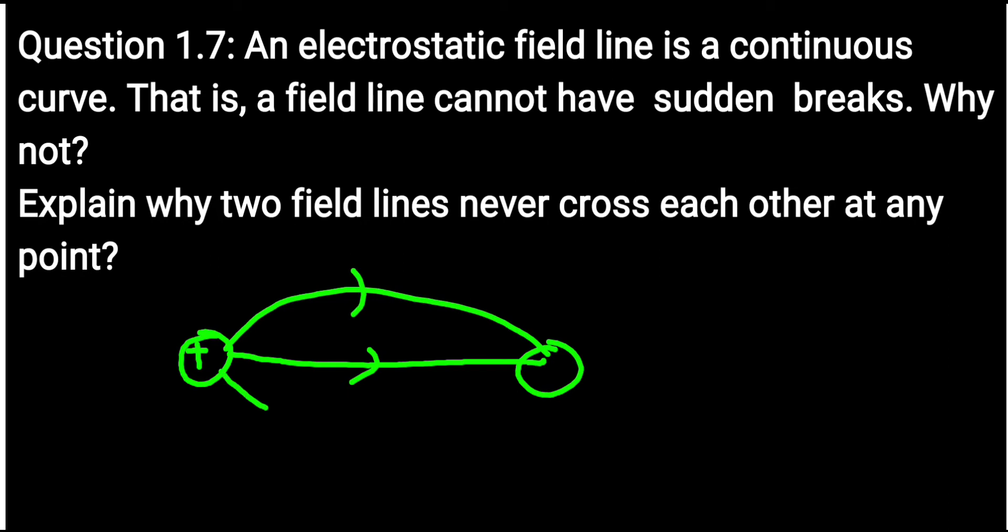What he is saying is that the line cannot have breaks. It cannot be like this. Now why not? The reason is the lines are traced. If you place a positive charge here, it will follow this path. It follows the path.